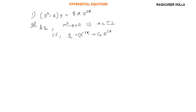This is the complementary function. Let us find the particular integral, that is yp here. That is 8x·e to the power of 2x, divided by D squared minus 4.